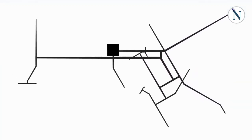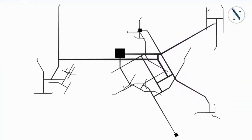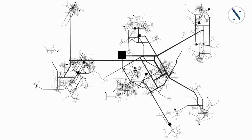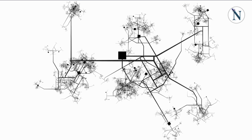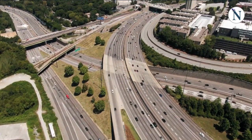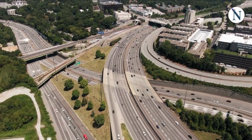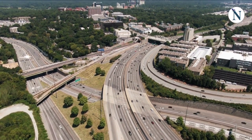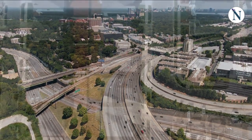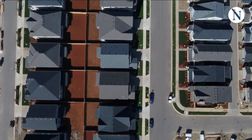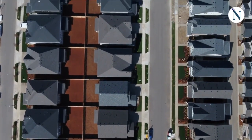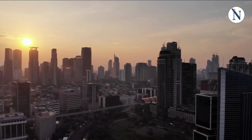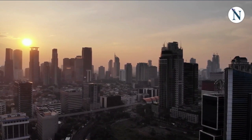Urban growth, on the other hand, is the physical manifestation of this population shift. It involves the expansion of urban areas, measured by the increased land area covered by built environments such as buildings, roads, and infrastructure. This growth can be in the form of horizontal expansion, sprawling outward, or vertical expansion, characterized by the construction of taller buildings within existing urban spaces.